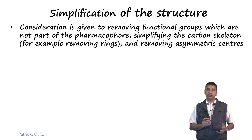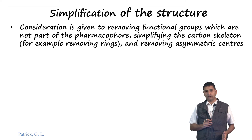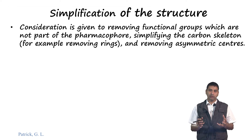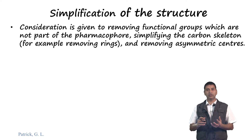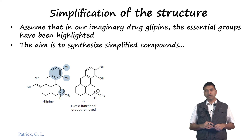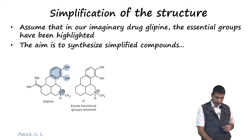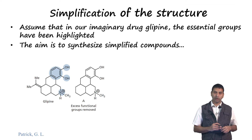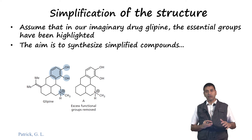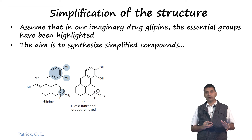At this stage we are also very interested in removing asymmetric centres. Asymmetric centres create problems because during synthesis you end up with a racemic mixture that must be separated, with each enantiomer tested individually for activity. Let us go back to our imaginary drug glipine, where the essential groups include the possibility of an ionic interaction with the quaternary ammonium salt, along with hydrogen bonding and Van der Waals interactions. Let us assume these are the essential interactions important for activity.